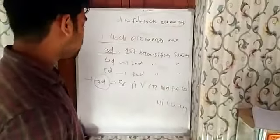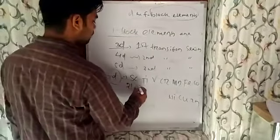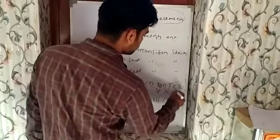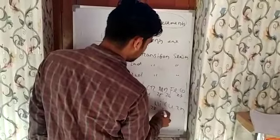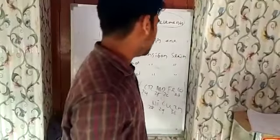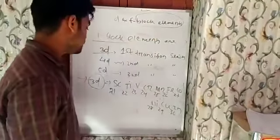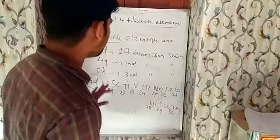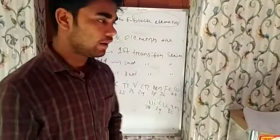First transition element, atomic number 21, 22, 23, 24, 25, 26, 27, 28, 29, 30. So from 21 to 40, first transition series, scandium to zinc elements are present.